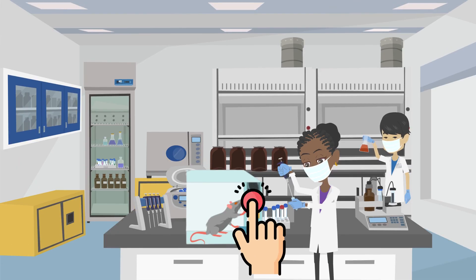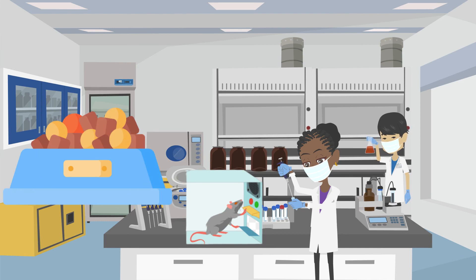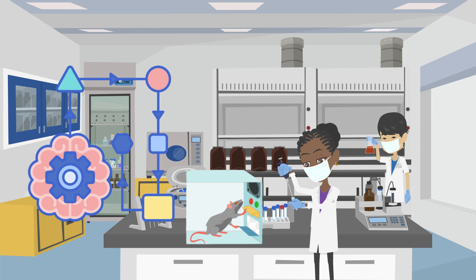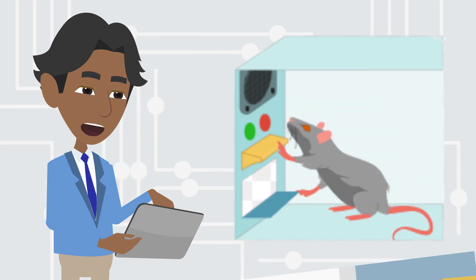For example, when a rat pressed the lever in the Skinner Box and received a food pellet, the positive consequence of receiving food would reinforce the behavior, making the rat more likely to press the lever again in the future.